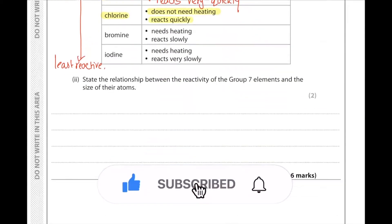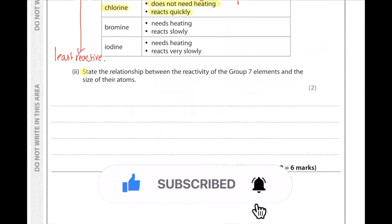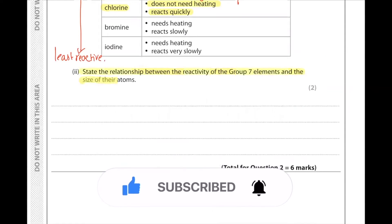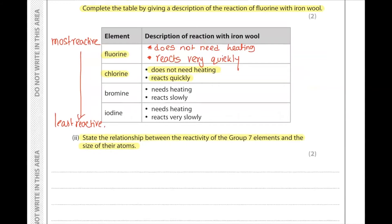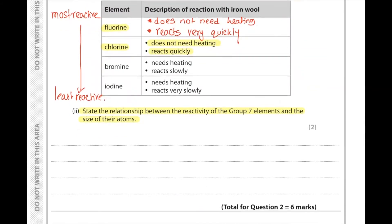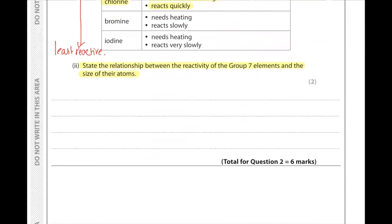State the relationship between the reactivity of the group seven elements and the size of their atoms. As the size of the atom increases from fluorine to iodine, the reactivity decreases.